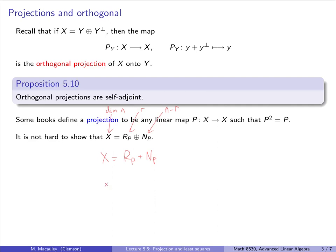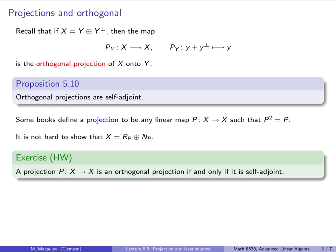Take any vector in X. We can decompose it as PX, which is in the range, plus (I - P)X, which is in the null space. Clearly their sum is X. Why is (I-P)X in the null space? Because P applied to (I-P)X gives PX - P²X = PX - PX = 0. I will leave as a homework exercise that a projection is an orthogonal projection if and only if it is self-adjoint. This is the converse of proposition 5.10.